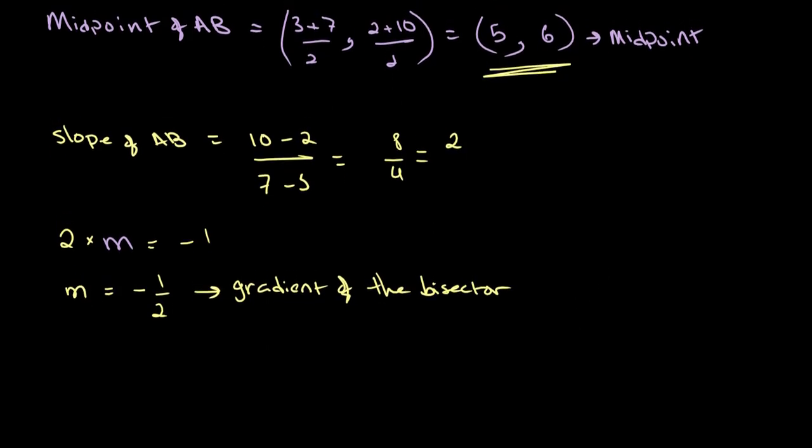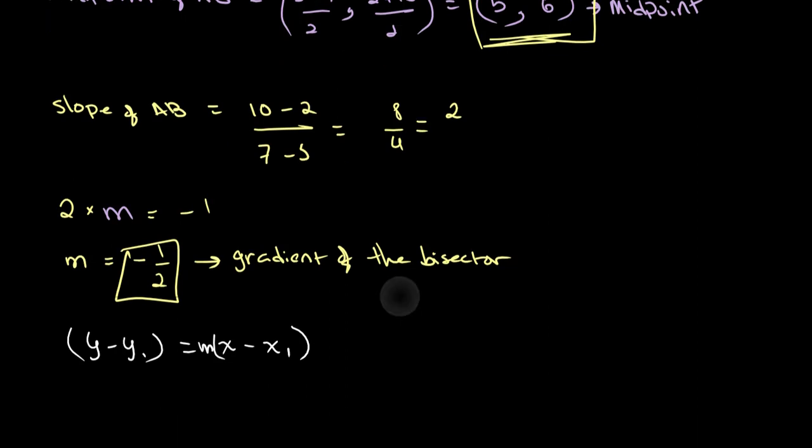Now we have a point and the gradient of our line. All we need to do now is plug this into our equation y minus y1 equals m times x minus x1. So we can write y minus 6 equals negative 1 over 2 times x minus 5.